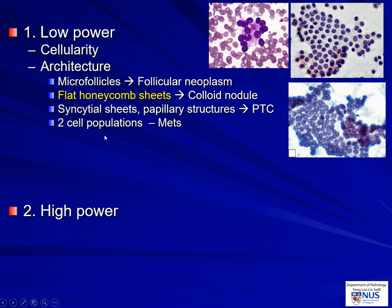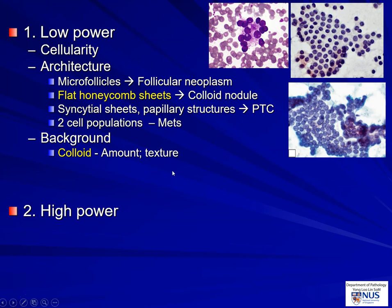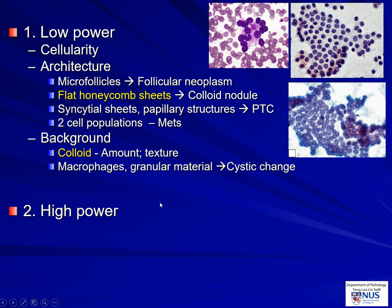If we see two cell populations with the native follicular cells, which are quite small, and another population, we think of metastases. For the background, of course it's colloid in terms of the amount and also whether it's thin or thick. A very thick colloid can be seen in some tumors, particularly papillary thyroid carcinoma. And if we see anything that indicates a cystic nodule, such as macrophages or granular proteinaceous material — and don't forget to look for lymphocytes, especially if you have an oncocytic or Hürthle cell population, because there may be lymphocytic thyroiditis.